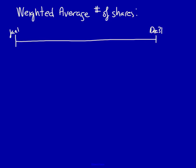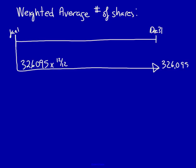For instance, on January 1st I know that 326,095 shares were outstanding. Those shares were outstanding for the whole year. Therefore, they contributed 326,095 shares to the production of wealth in this company.